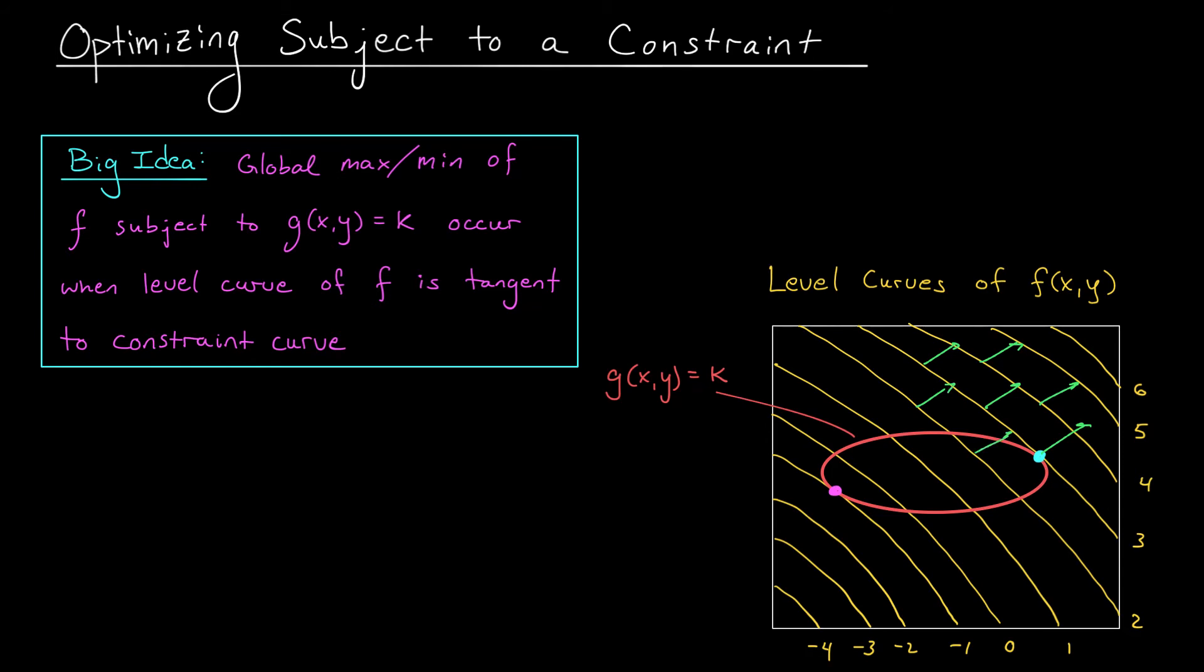I'm just going to go ahead and draw in a whole bunch of gradients for my function, so you can get an idea of what the gradients look like at various points. We're going to get a picture that looks something like this. Okay, well, that's the situation for f. But what can we say about g? Well, g is just a function of x and y, right? So, we can talk about its gradient. Just like for f, the gradient for g is going to point perpendicular to its level curves.